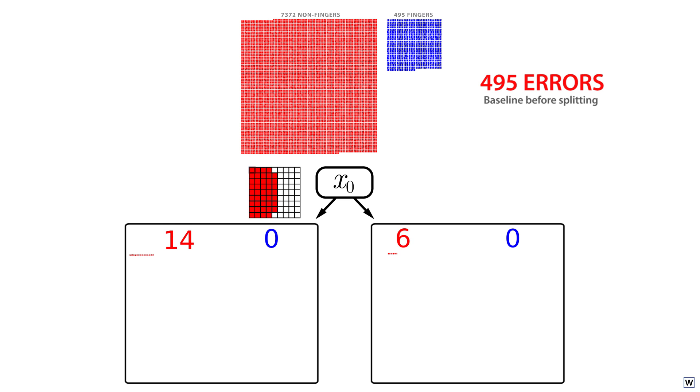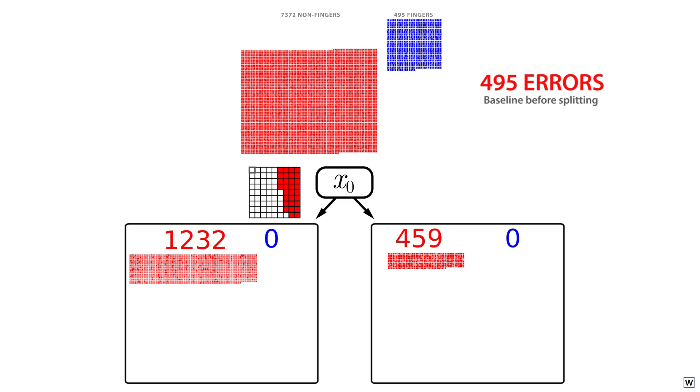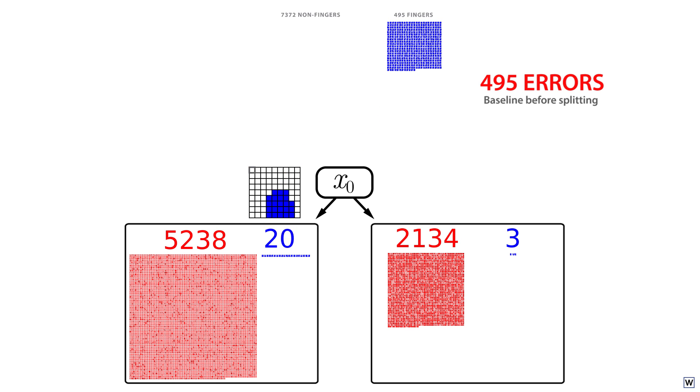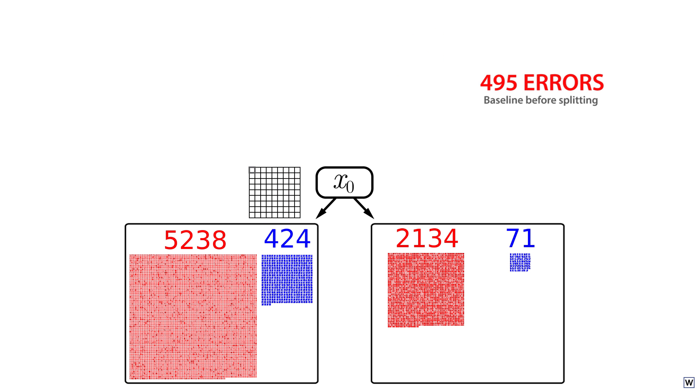If we give some deeper thought to our majority class labeling system, we can see one reason all splits came out the same. Our data is imbalanced. We have way more negative non-finger examples than we have positive finger examples. Unless our first split creates a node with a majority of positive examples, we will continue to classify all fingers as non-fingers, and make exactly 495 misclassification errors.